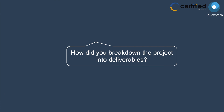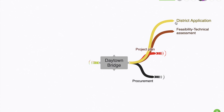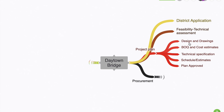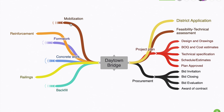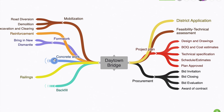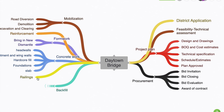Henry broke the project down into deliverables: the district application, a feasibility technical assessment, the project plan layout, procurement deliverables, mobilization, three levels of reinforcement, formwork for the bridge, concrete work, railings, and finally backfill. The majority of these deliverables will have specifications documented defining what should be produced to get each signed off.